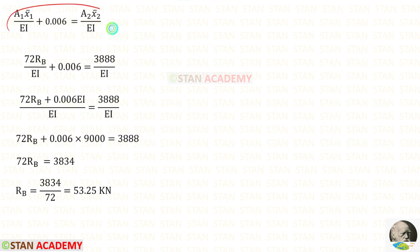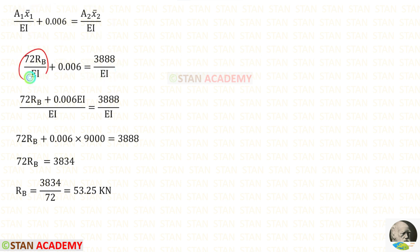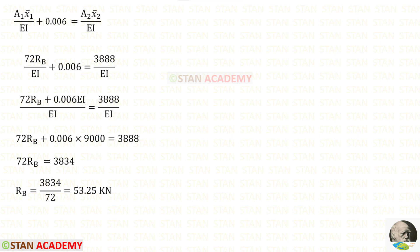In the compatibility equation, we have now found both terms. Let us apply them. For these two terms, we can take the LCM and then eliminate EI. The value of EI is given in the question as 9000. Solving for Rb, we get 53.25 kN.